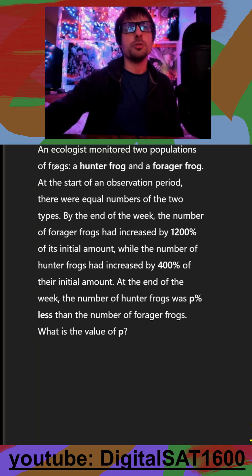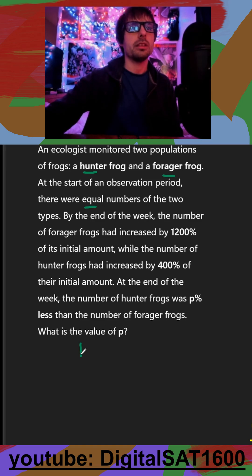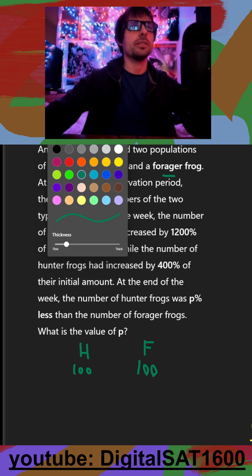An ecologist monitored two populations of frogs: a hunter frog and a forager frog. At the start of the observation period, there were equal numbers of the two, so there's probably going to be a change. The easiest number to start with for both populations is always going to be 100. Let's see what happens over this period.